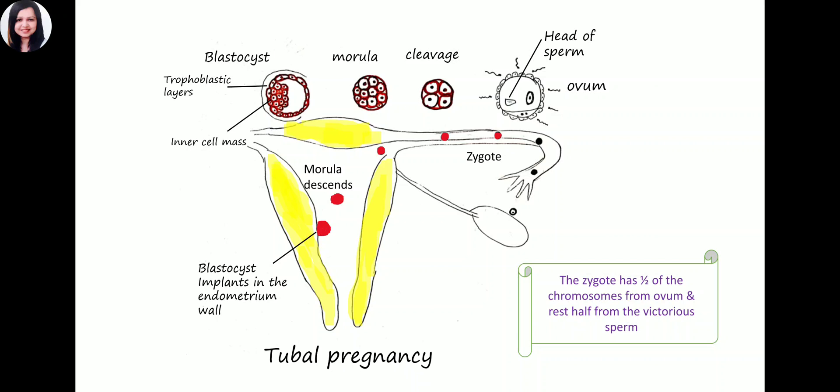Sometimes it happens that the morula does not descend into the uterus but remains in the fallopian tube and starts getting implanted there. Will such a pregnancy called tubal pregnancy or fallopian tube pregnancy succeed? No. Because the fallopian tube cannot expand with the size of the fetus. Ultimately there will be pain and rupture may occur, causing hemorrhage. Tubal pregnancy is a medical emergency. Every pregnant patient must be carefully evaluated for pain.